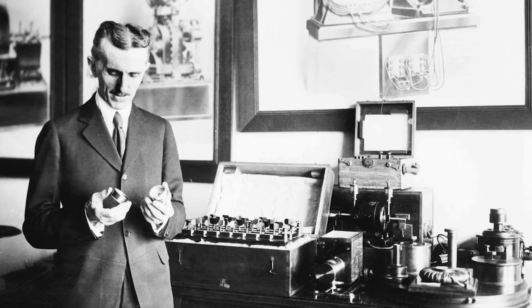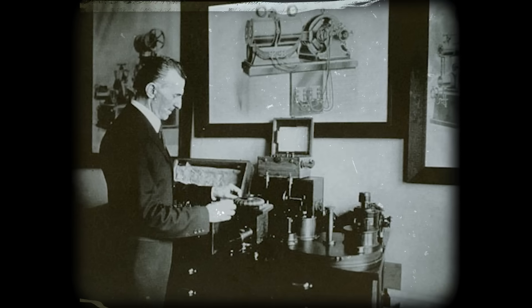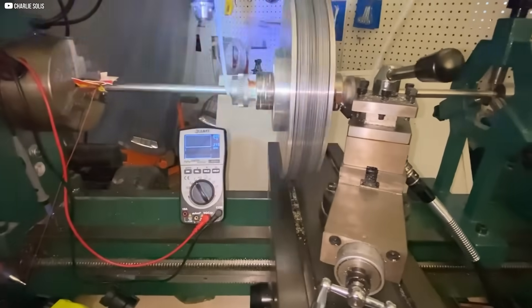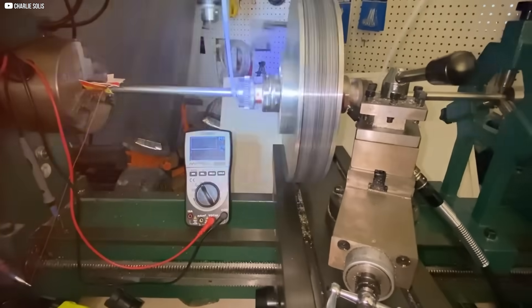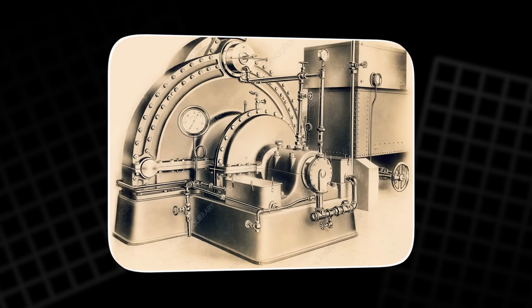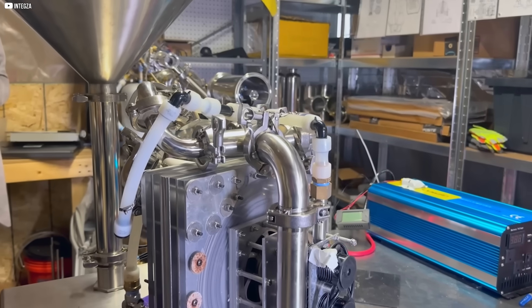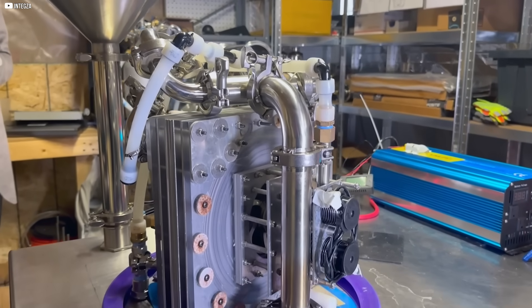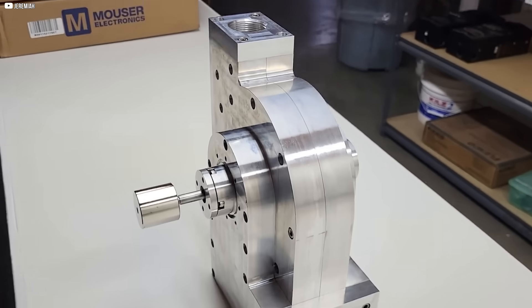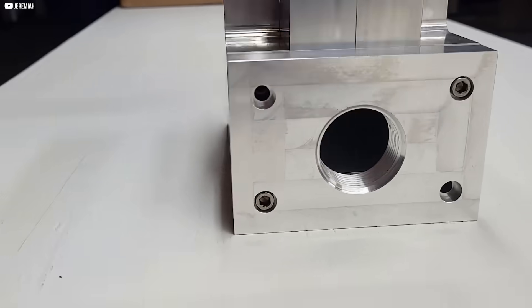Tesla never lived to see these uses, but his legacy pulses through them. The turbine can pull, push, and spin. It's a design that does more with less. And that makes it timeless. Not just a machine, but a clever answer to problems that haven't changed in a century.